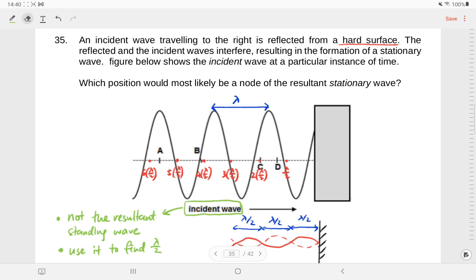Actually no. The only thing you need to know is the wave reflects off a hard surface, so at the position of the wall, the resultant wave would definitely be a node here.